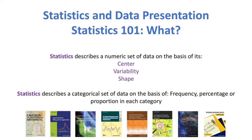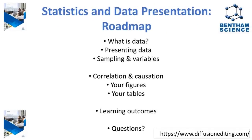So what is statistics? It's nevertheless important to have a thorough grounding in some of this basic information. Statistics describes a numeric data set on the basis of a number of variables: the center, the variability, and the shape. Statistics can also be used to describe a categorical set of data on the basis of characteristics such as frequency, percentage, or categorical proportions. We will ask how you can present your data, look at sampling and variables, correlation and causation, and how you can use these characteristics in the construction of your figures and tables.